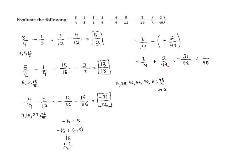And when we add these together, negative 21 plus 4 gives us negative 17/98, which is our final answer.